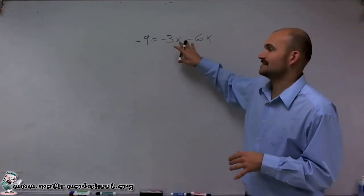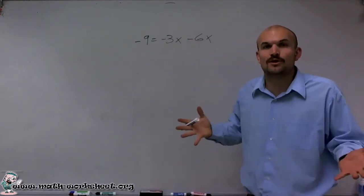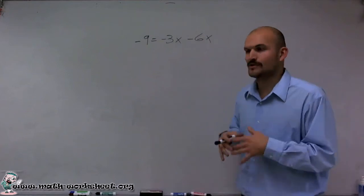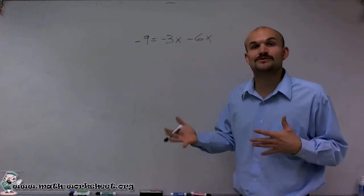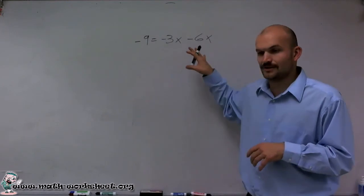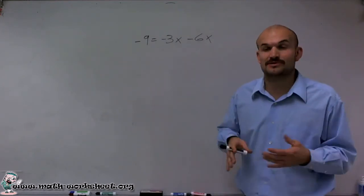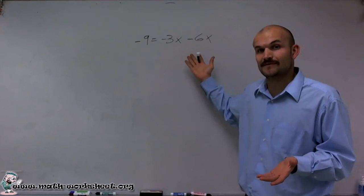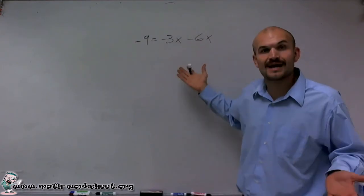What I notice right now is I have two variables, and I can't solve for a variable when I have two of them. So I need some way to simplify this equation before I can actually solve for x. What I'm going to do is look at whether I can combine these variables at all. Since they're on the same side of the equation and they're both like terms, I can combine them.